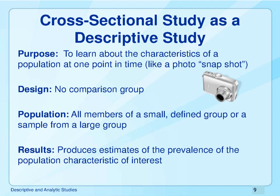A cross-sectional study can be either descriptive or analytical depending on its purpose and design. It looks at a snapshot of the study population using prevalence data, with no comparison or control group. The population studied consists of all members of a defined group drawn from a larger population, with the goal of producing an estimate of the prevalence of a disease or other phenomena in that larger population. It is called cross-sectional because it uses a representative sample — or cross-section — of the larger population.